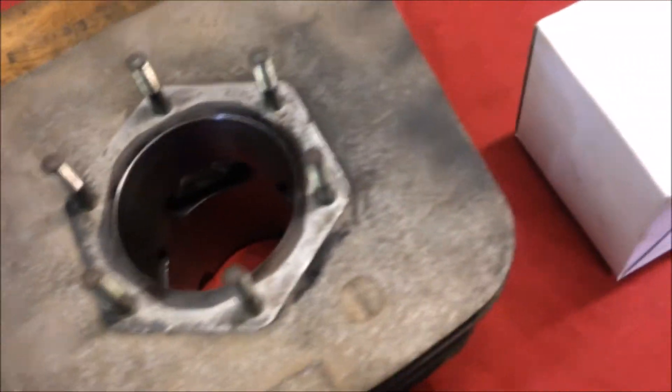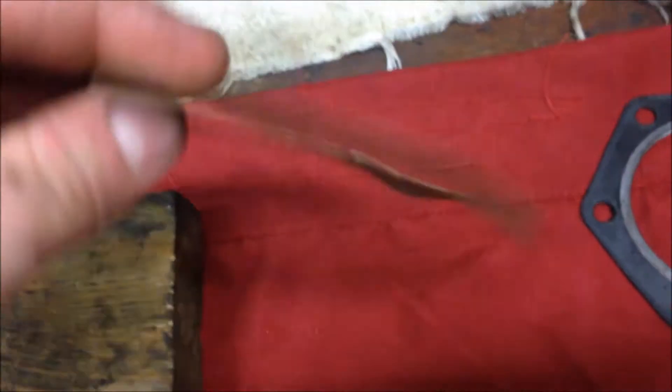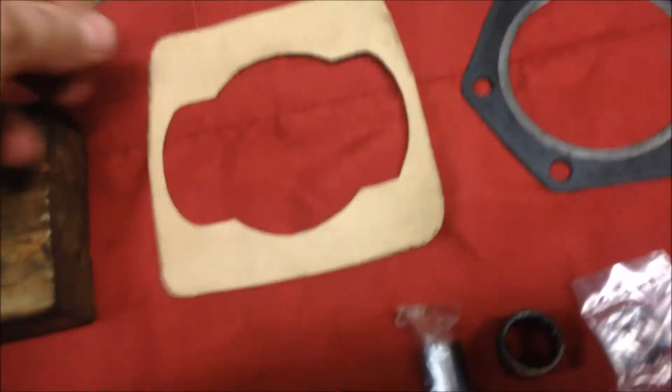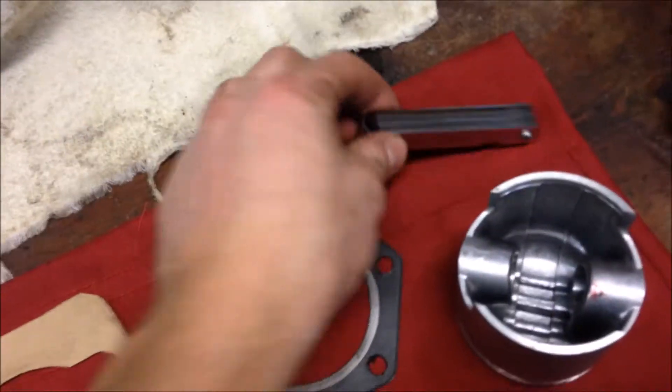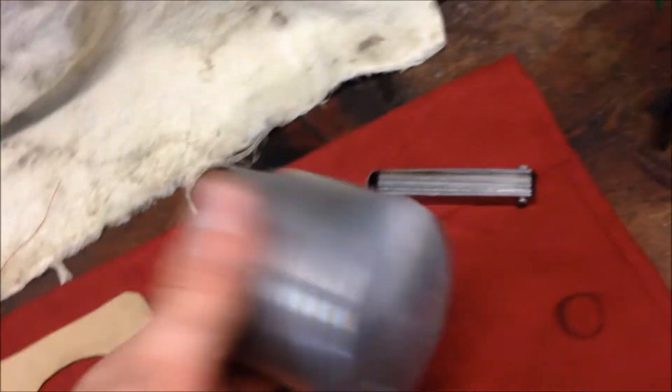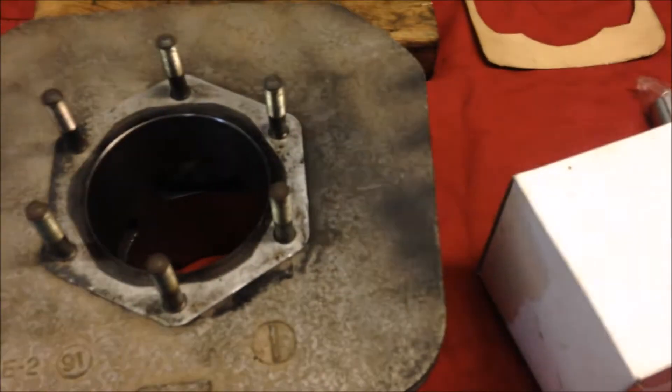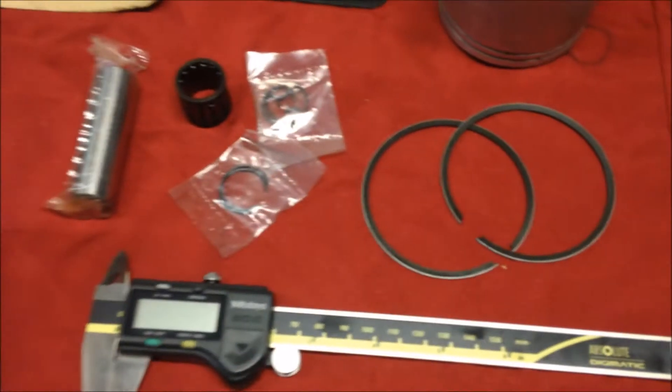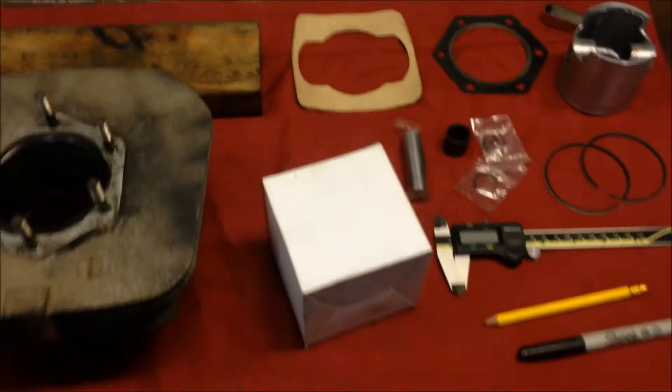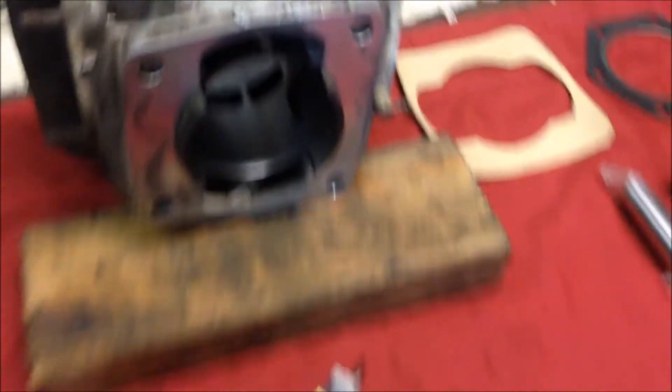For working on the top end, we have the cylinder which was recently bored out and honed 10 thousandths over, a homemade base gasket cut from gasket material, head gasket, feeler gauge, new piston 10 thousandths oversize, rings, clips, wrist pin, bearing, wrist pin, and caliper. We're going to check piston to cylinder clearance and ring end gap.